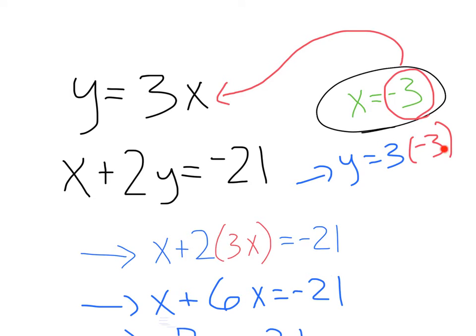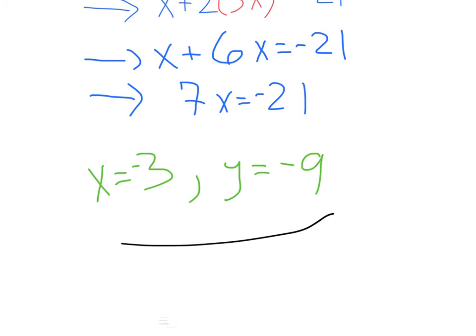That's going to give us y equals 3 times negative 3. Plugging that in, solving from there, we'll get y equals negative 9. And there we are. We've got x equals negative 3, y equals negative 9. Beautiful.